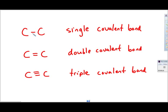The first example, if you see a single dash in between two elements, that represents a single covalent bond. There's one shared pair of electrons between these two. Each carbon is sharing one of its valence electrons with the other.